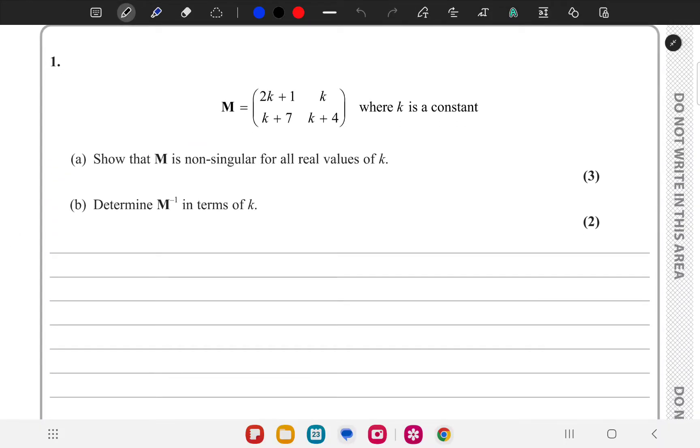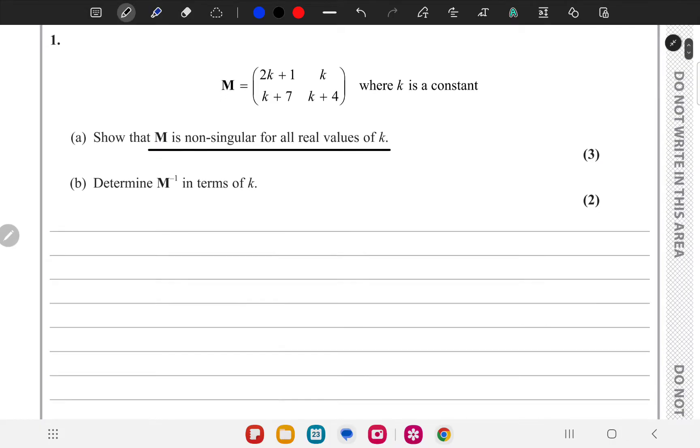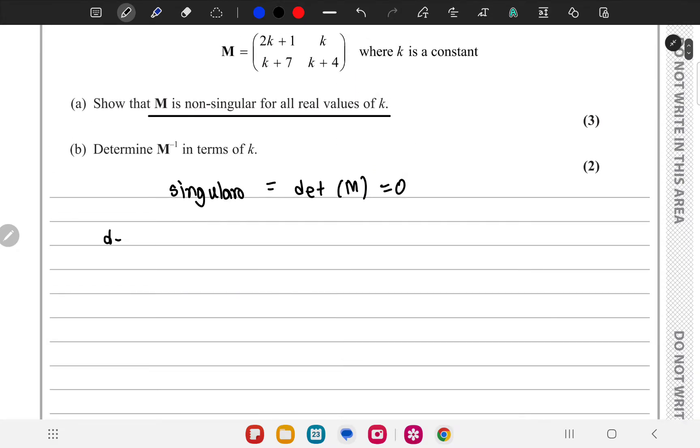We have to show that M is non-singular for all real values of K. So singular is when the determinant of M would be 0. So we just have to find the determinant of M in this case and have to show that it cannot be 0 if K is real.